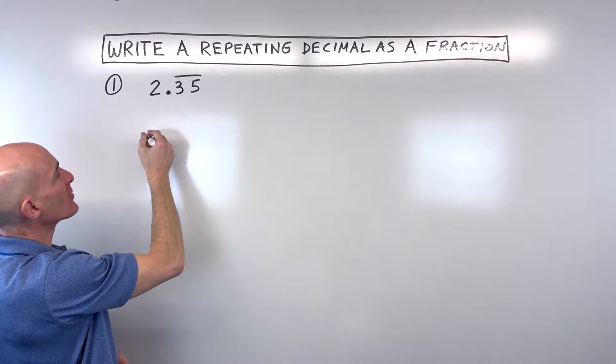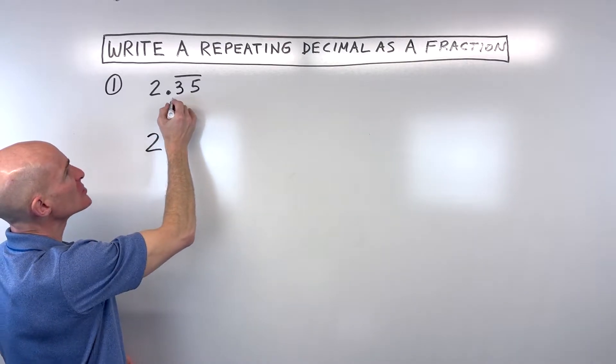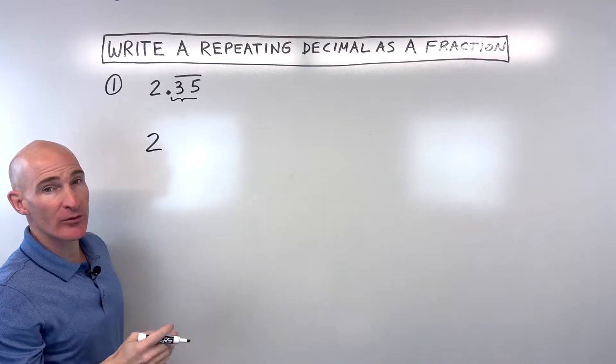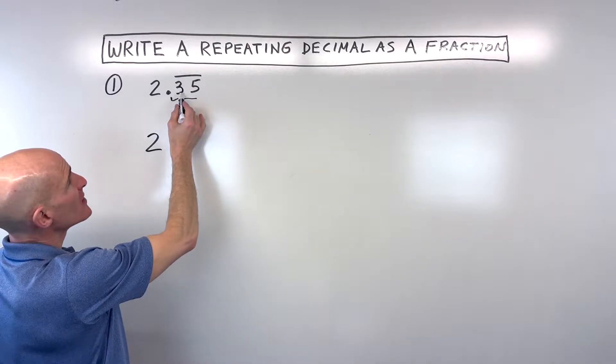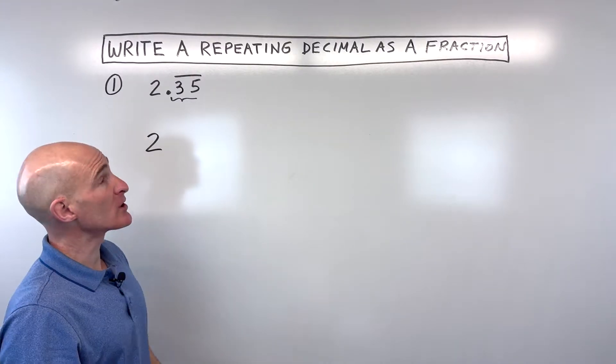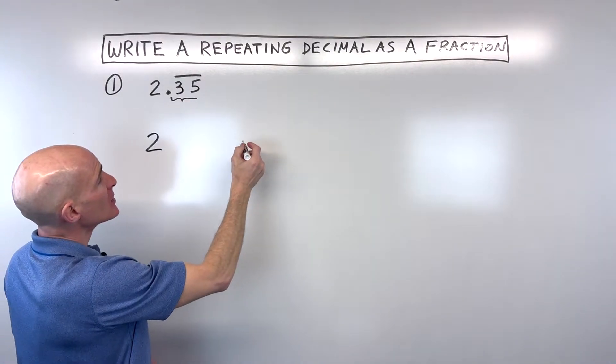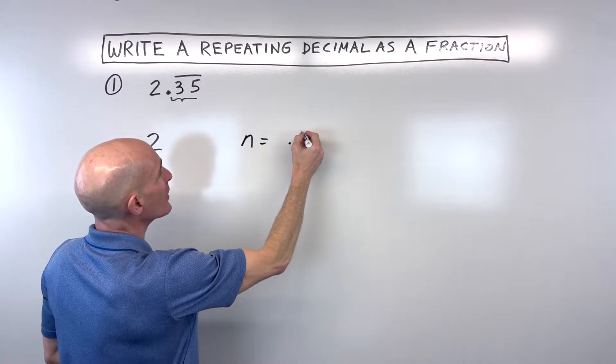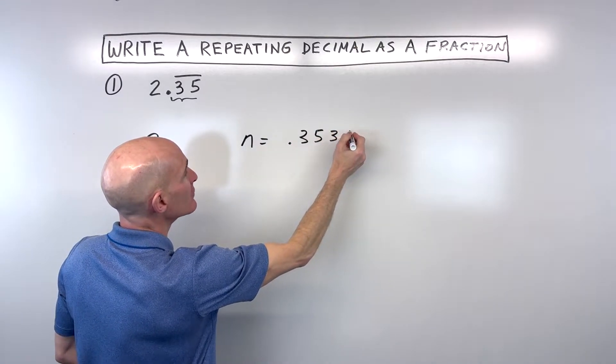Well, this part here was already like a whole number, 2. So let's just focus on the repeating part, the 0.353535. So what you can do, because there's two decimal places here being repeated, we're going to take this number and we're going to say n is equal to 0.353535.